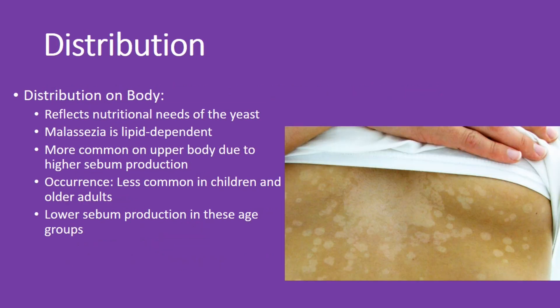The distribution of this infection reflects the nutritional needs of the yeast. Since Malassezia is lipid-dependent, it's more common on the upper body where there is higher sebum production. It's less common in children and older adults due to lower sebum production in these age groups. This explains why you might see those patches more frequently on your chest, back, and shoulders.